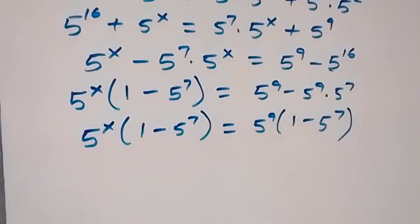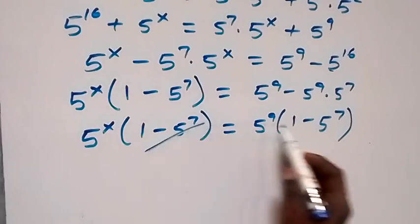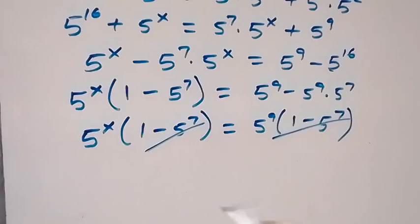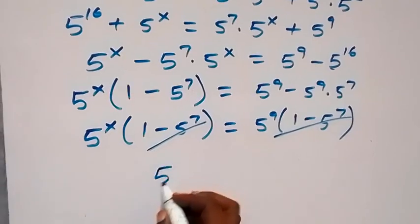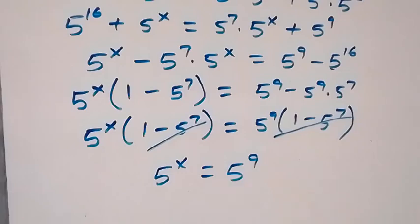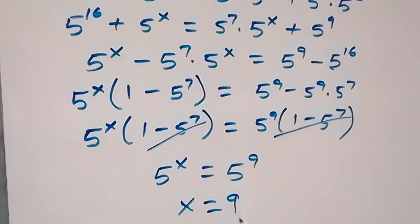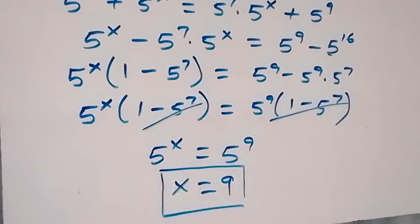Since (1 minus 5 raised to power 7) appears on both sides, it cancels out. We then have the same base on both sides, so we equate the powers and x equals 9. The value of x in this problem is 9.